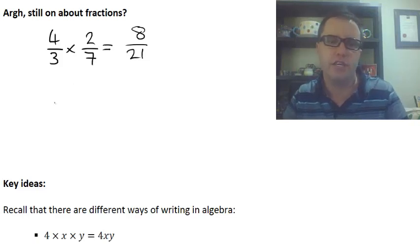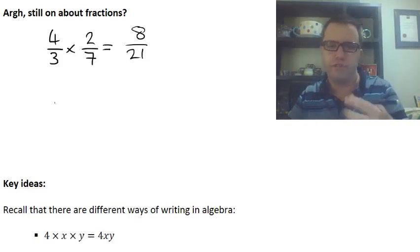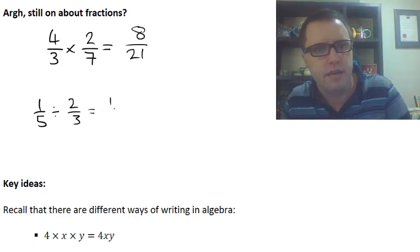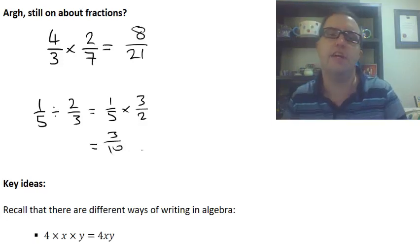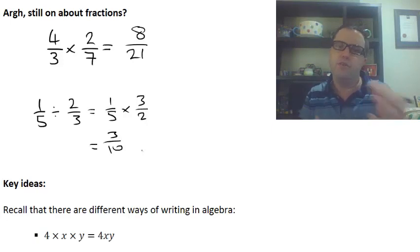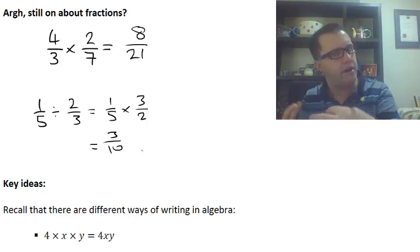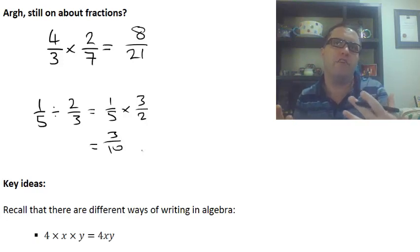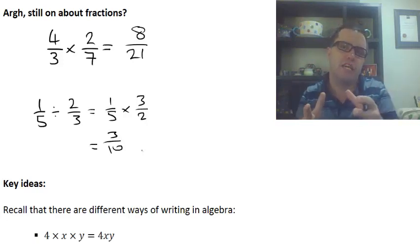With our division, it had a bit of a trick to it with the flipping. If we have 1/5 divided by 2/3, that would be the same as 1/5 multiplied by 3/2, and that would get us 3/10. You don't have to worry about the fraction stuff in algebra just yet, but remember that multiplying and dividing was easy because we just smashed it together.